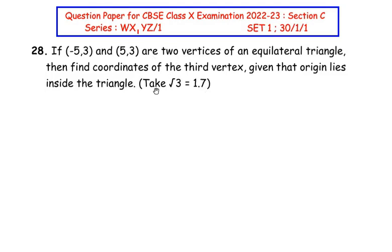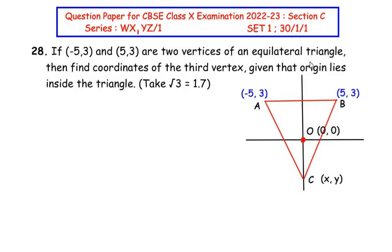Let us try to understand the question by drawing a rough graph first. Two vertices of the equilateral triangle are given: A at (-5, 3) and B at (5, 3). This is our y-axis and this is our x-axis. We have to find the coordinates of the third vertex, and it is given that the origin lies inside the triangle. The origin O is drawn right inside the triangle with coordinates (0, 0). Let us assume the third vertex C has coordinates (x, y).